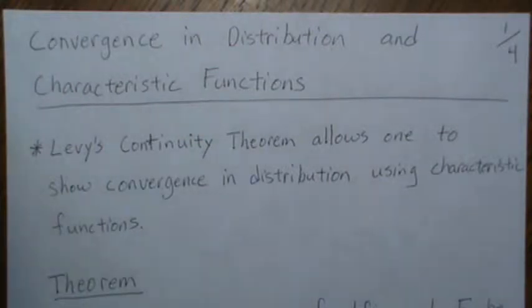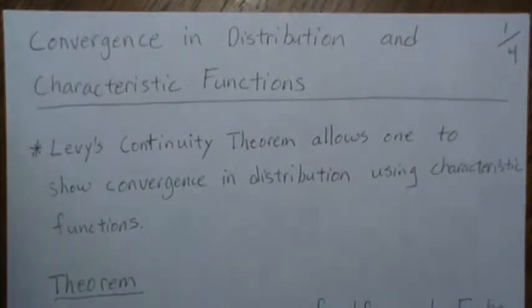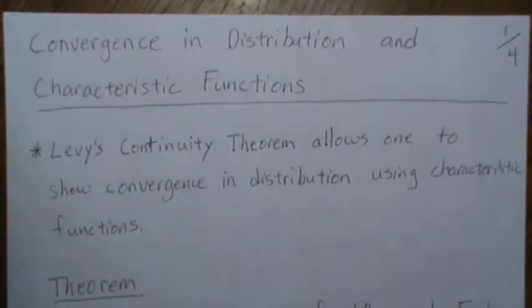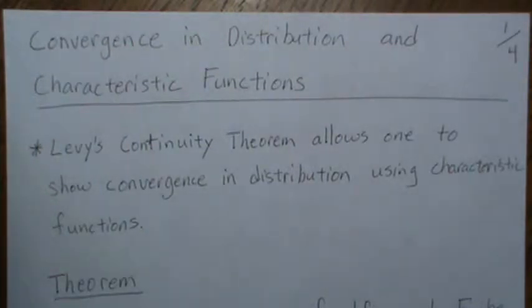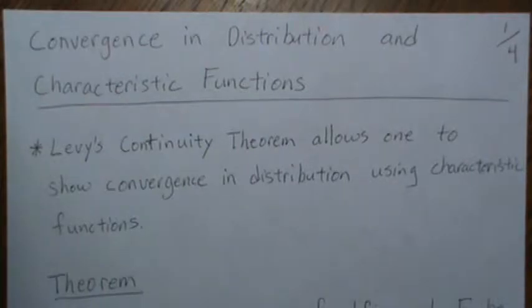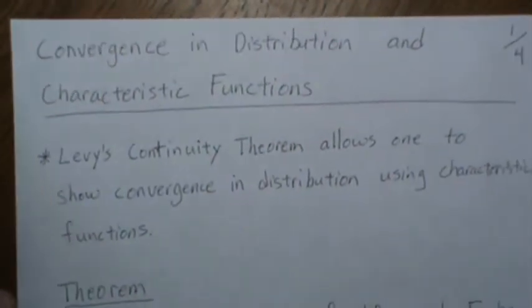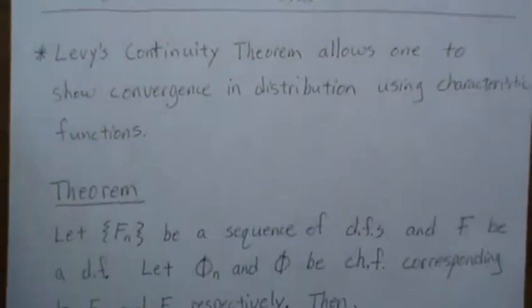It's a big time saver in many situations, but what we're going to do here is look at one of the assumptions that's often overlooked — and if it's overlooked, the theorem doesn't hold. So we'll give an example of that, and then we're also going to prove that the distribution functions Fn converge uniformly.